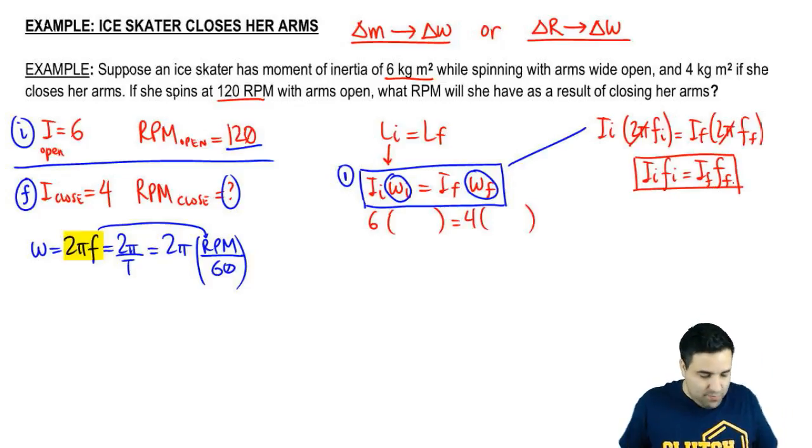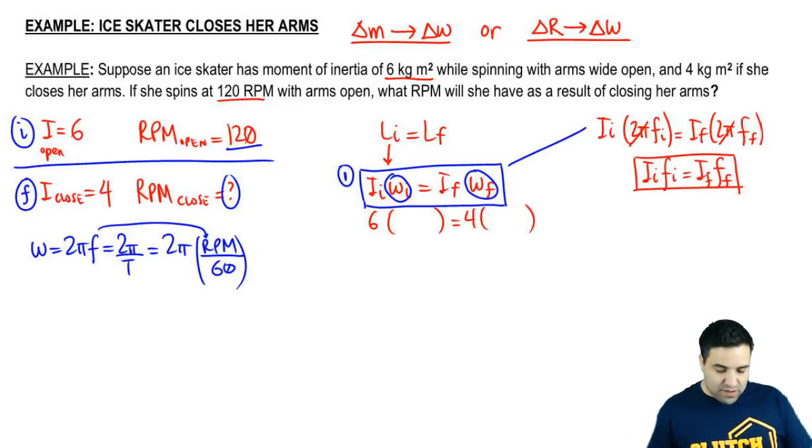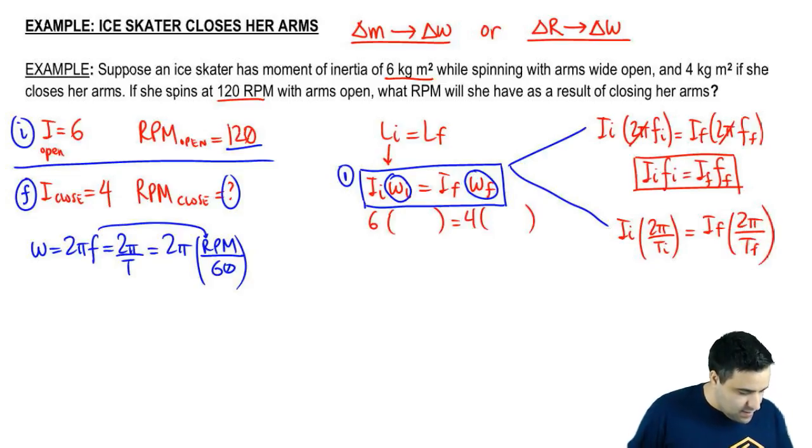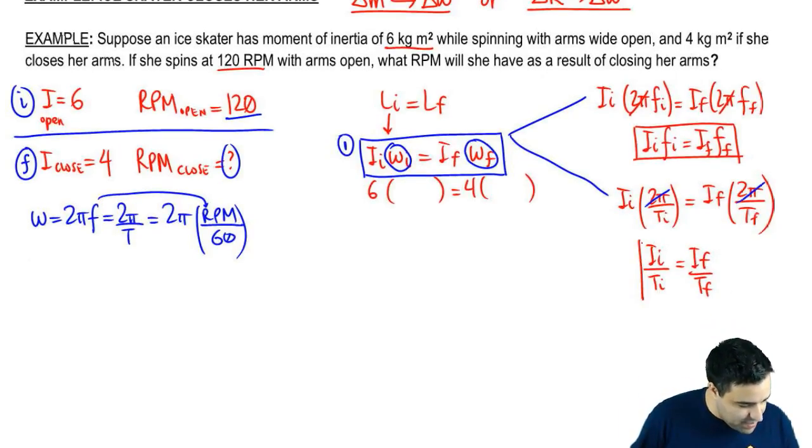And they are both on the top. If you do this with period, this is what you get. This is version two. I 2π period initial equals I final 2π period final. These guys will cancel and you end up with I initial period initial equals I final period final. And you can do the same thing for RPM. That's the one we're going to use here.